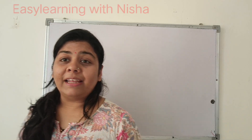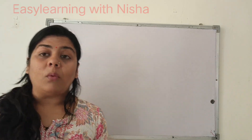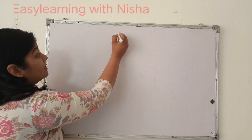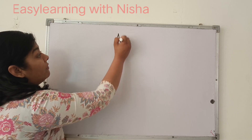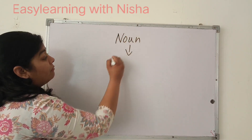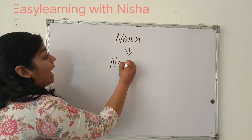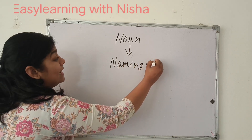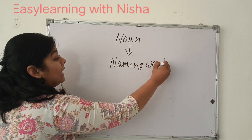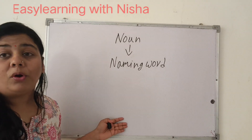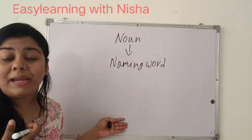In our previous video we had learned about nouns. I had taught you that nouns are the naming words. So everything which we can see has a name, right? We can see this is a blackboard.